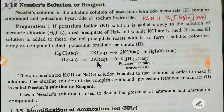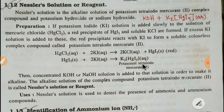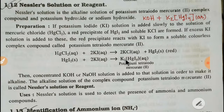If you add more potassium iodide to this solution, the potassium iodide will react with mercuric iodide to form a soluble, colorless complex compound called potassium tetraiodo mercurate.